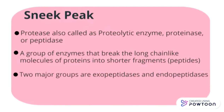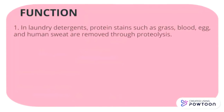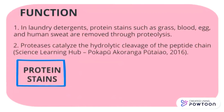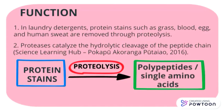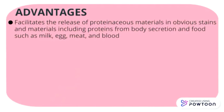Protease breaks long-chain molecules of protein into shorter fragments. There are 2 major groups of Protease. Protease removes protein stains such as rust, blood, egg, and human sweat through proteolysis. The protein stain undergoes proteolysis and is converted into polypeptides and single amino acids.